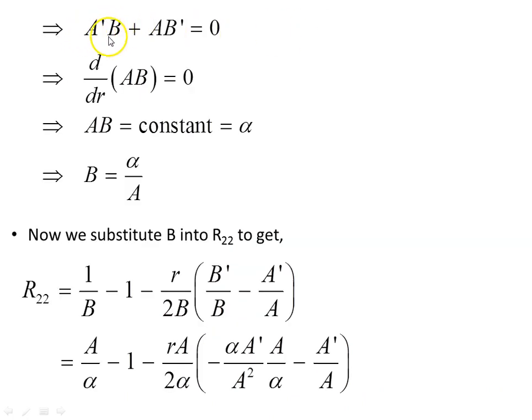That means the bit in brackets we saw earlier, A'B + AB' = 0, and that looks like the product rule that could be expressed as d/dr, and that each of these are a function of r. So d/dr of AB, using the product rule or Leibniz rule, the derivative with respect to r of this product here will give us this object, and that's equal to zero. If we anti-differentiate that, we get AB is equal to a constant. We'll call that constant alpha, and that implies that B = α/A.